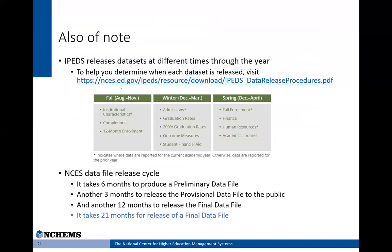Another thing to note about using IPEDS data sets is that IPEDS collects and releases data sets at different times throughout the year. Since the different IPEDS survey files are released at different times, you might not have access to all of the 2018 files at once — this is good to keep in mind when planning your analysis. After institutions report their data to IPEDS, it takes NCES nine months to release a provisional file for public use. Final data files are released after another 12 months when institutions have had time to review and revise what was reported. At NCHEMS we use the provisional files when they become available and update to the final files when they are eventually released.